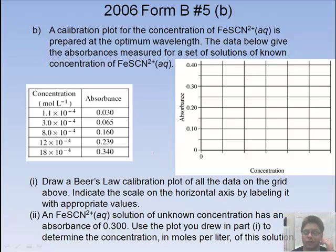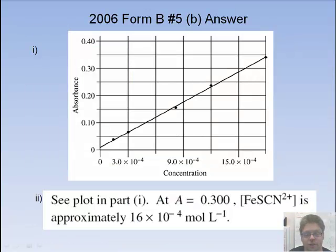So now once you have that information, part B of the same question. It has a calibration plot for the concentration of FeSCN is prepared at the optimum wavelength, which we just knew as 450. Data below. Draw a Beer's Law calibration plot of all the data on the grid above. Indicate the scale on the horizontal axis by labeling it with appropriate values. So we have concentration. We got absorbance and concentration. So we'll plot the data on here. And then we got an unknown. The unknown has an absorbance of 0.3. So once we get the calibration curve, we can solve for the molarity of this solution.